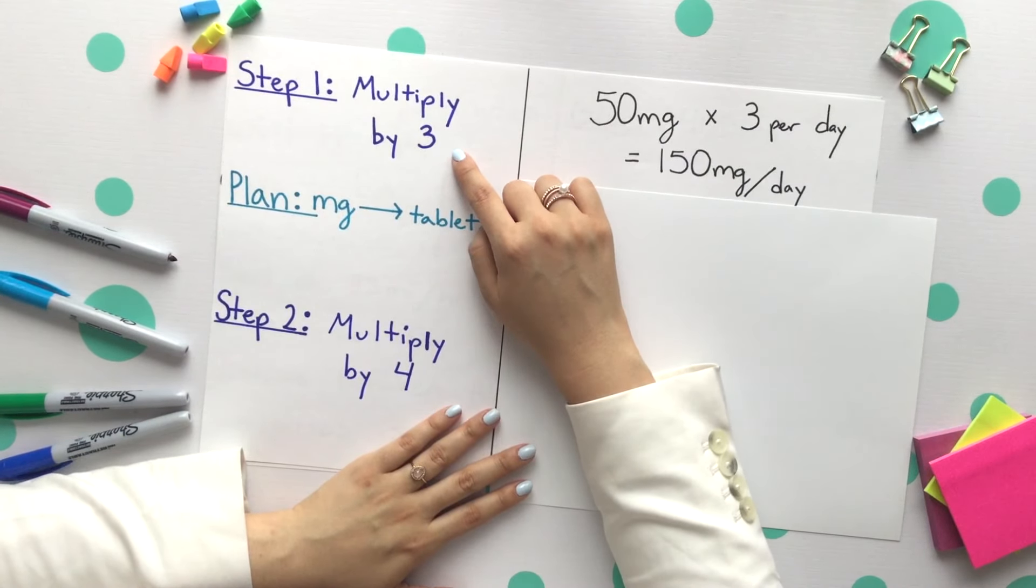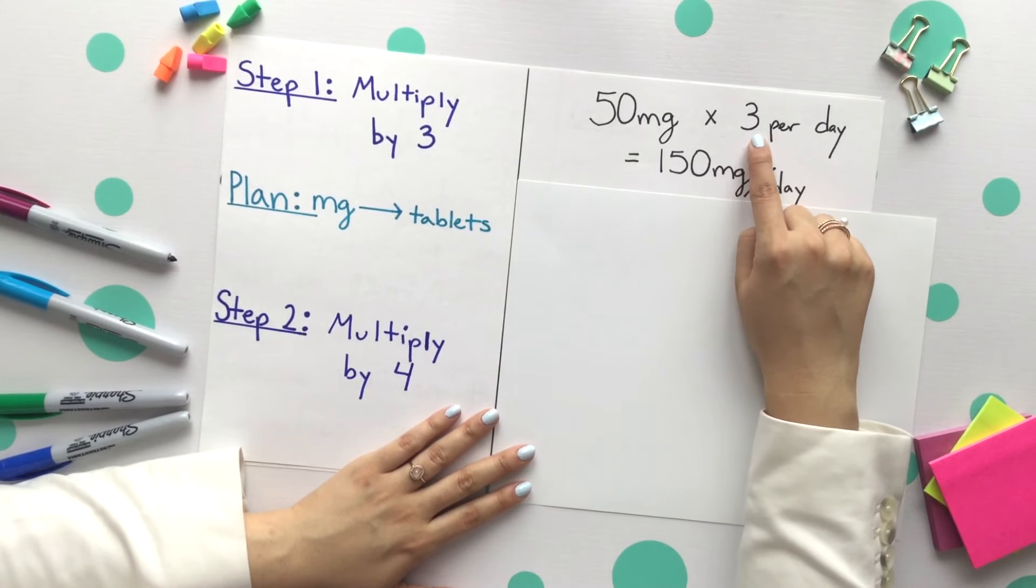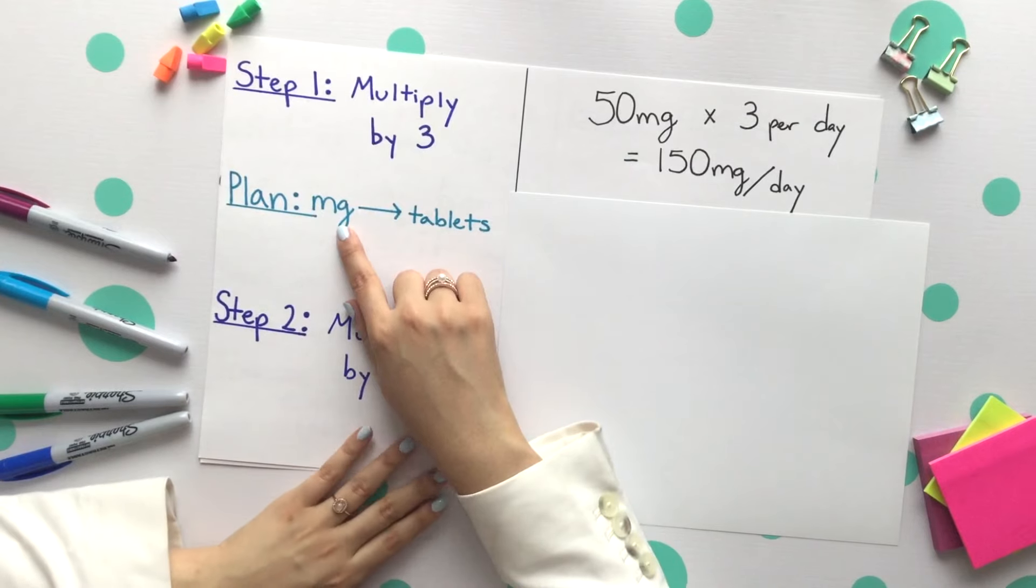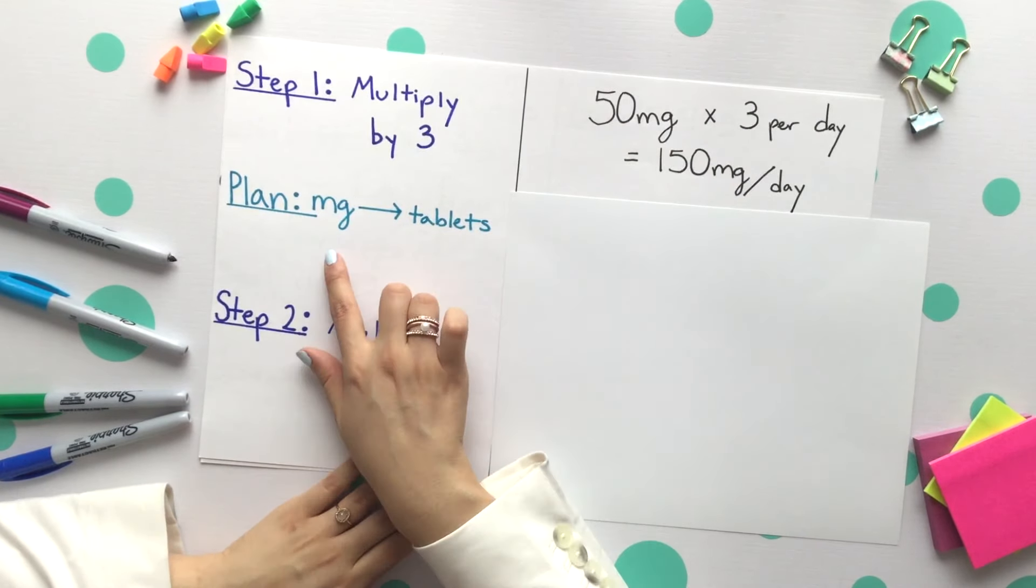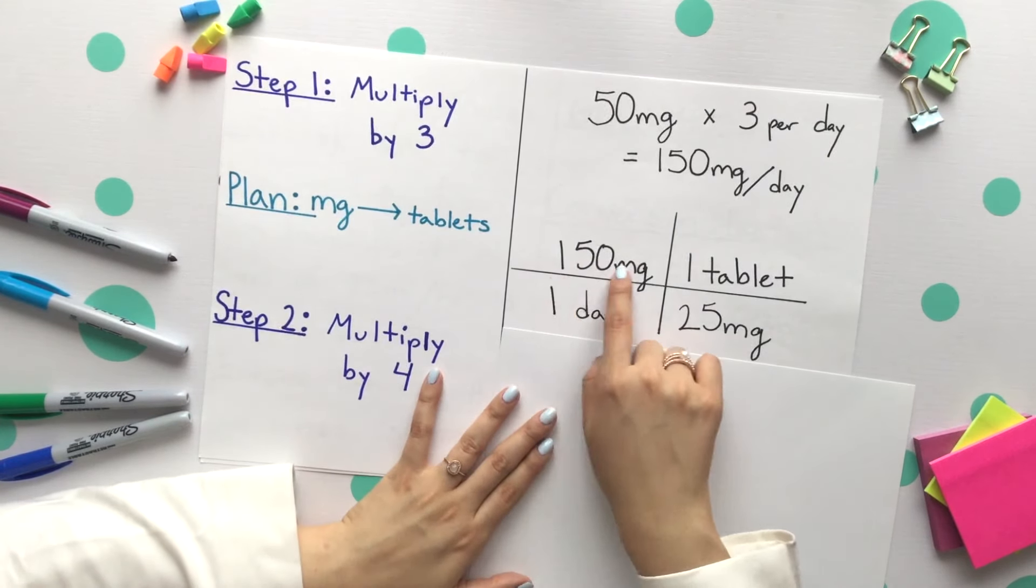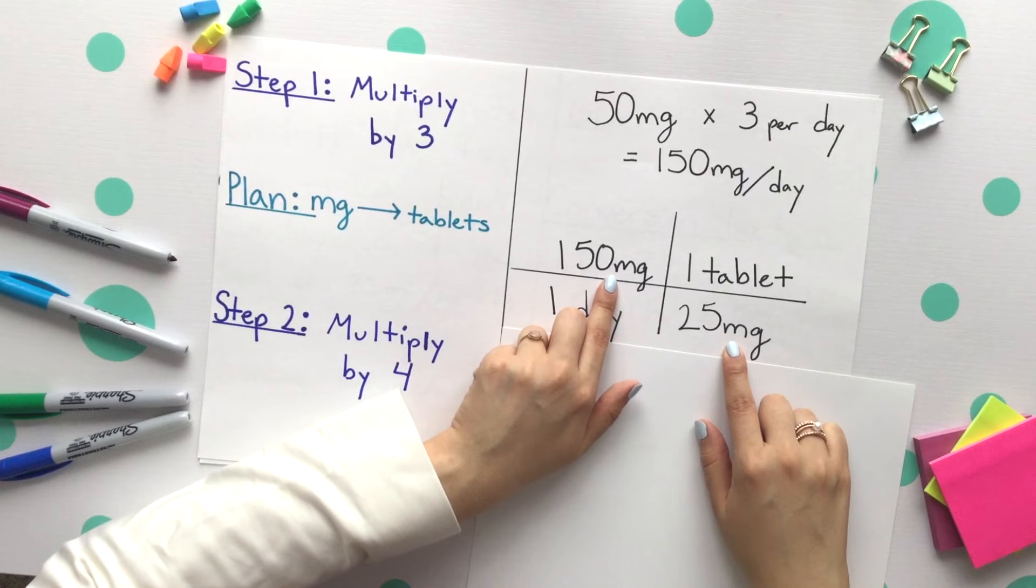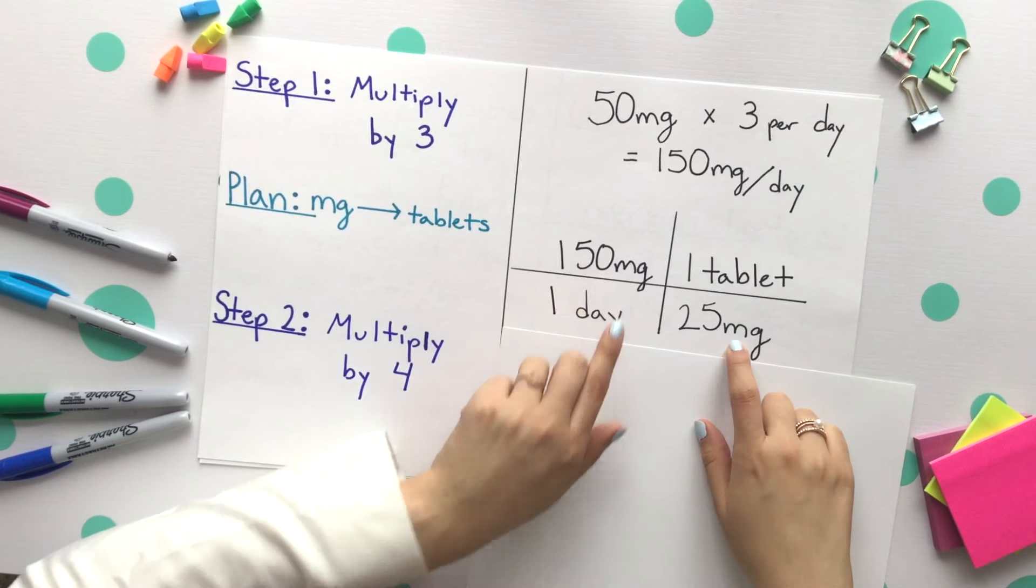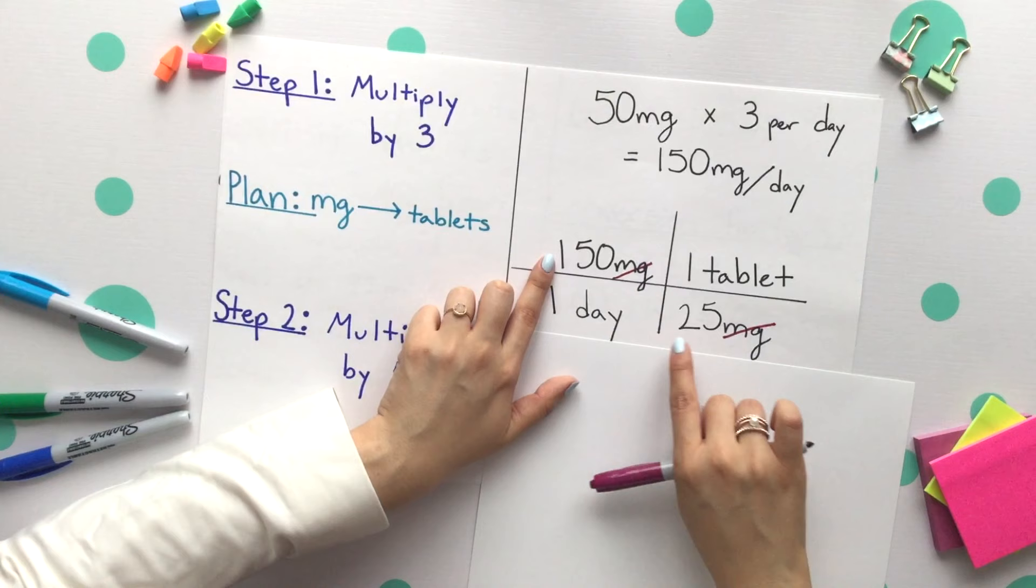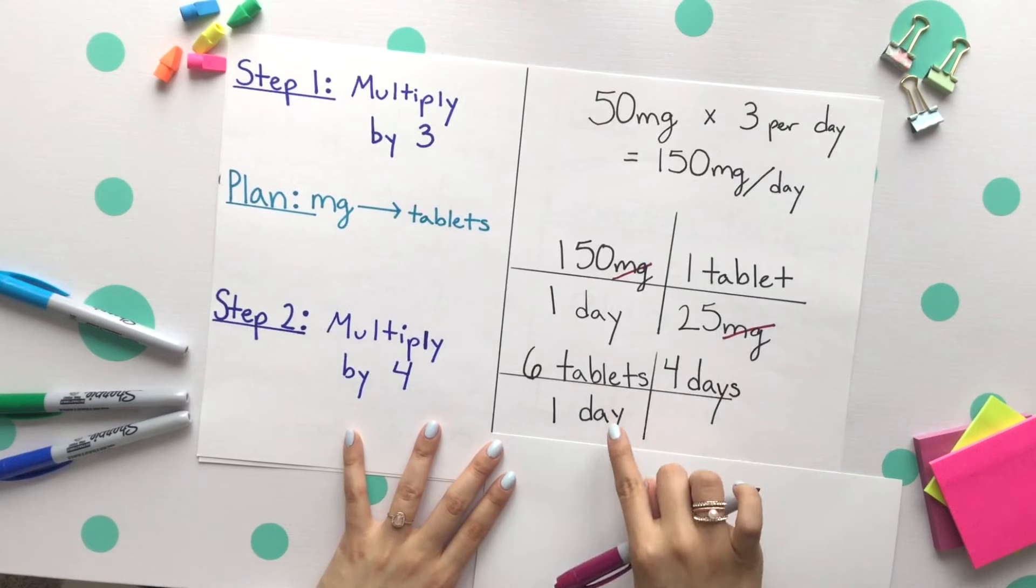Step one is to multiply your given by three. Take the 50 milligrams and multiply it by the three times per day, and our actual given is 150 milligrams per day. The next plan is taking our milligrams per day and changing that to tablets. The proper setup will have our new given, the 150 milligrams per every one day. Next, you want to match the milligrams to cancel the amounts. We'll place them across from each other using our conversion factor. The milligrams will then cancel and now we have tablets per day. Divide the 150 divided by 25 and you get six tablets per every one day.